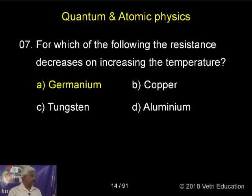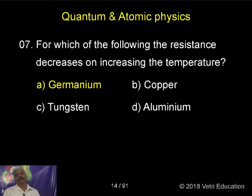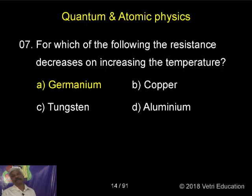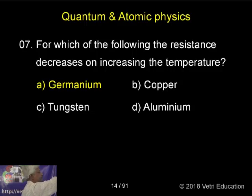However, when temperature increases, sometimes the resistance decreases. There is a negative effect — this negative temperature coefficient effect is called a thermistor, which may be a semiconductor, for example germanium.